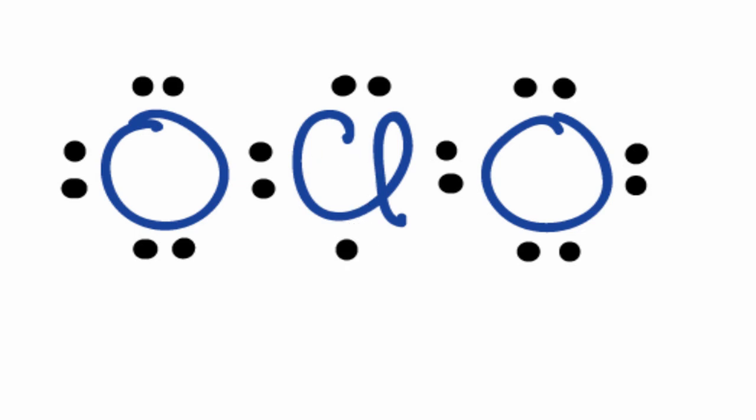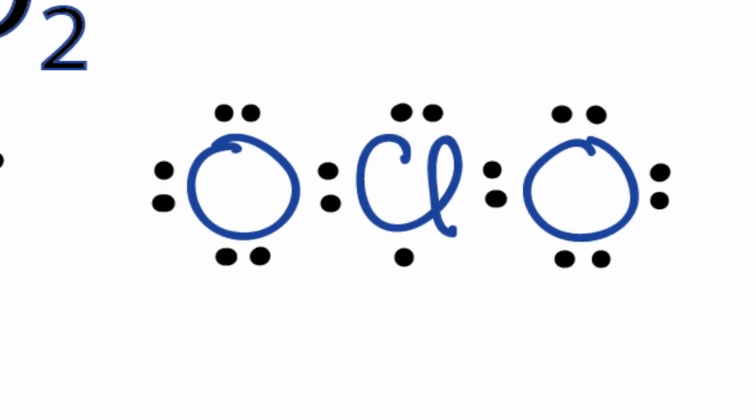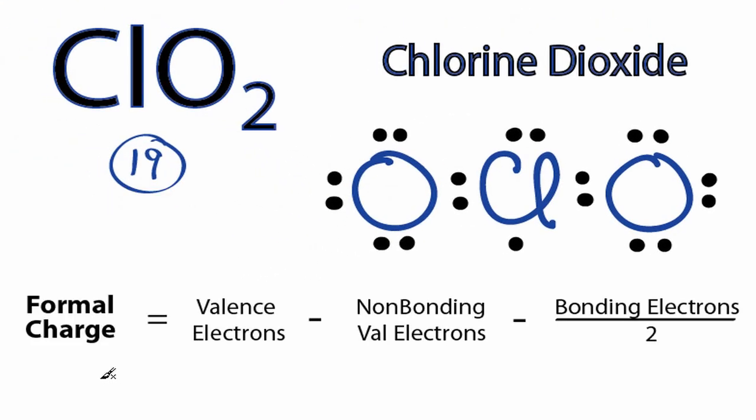The oxygens have octets, but the chlorine only has seven valence electrons. It's kind of strange to have that one valence electron there, so we really need to check our formal charges to see if this is the best Lewis structure for ClO2.